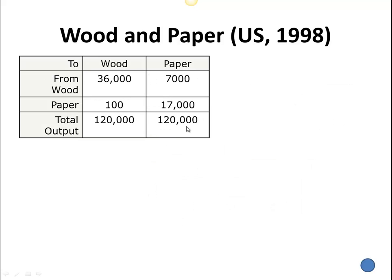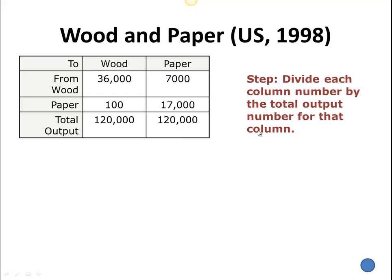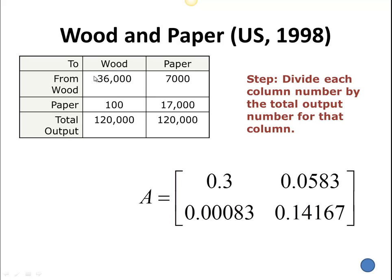So we're going to take our table and the step is pretty straightforward — it's a little time consuming and tedious, I admit, but it's pretty straightforward. To convert this: out of 120,000 units of production, we had used up 36,000 units of wood to produce that. If I want it per one unit, what we have to do is for each of the columns, we divide by the total output for that column. So I'm going to take this 36,000, divide by 120,000, and that's where we get 0.3.